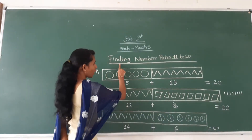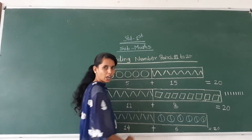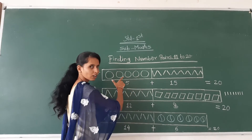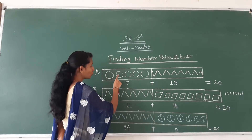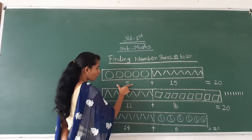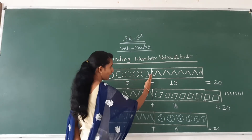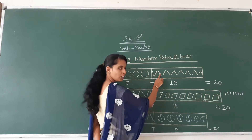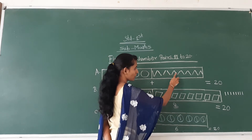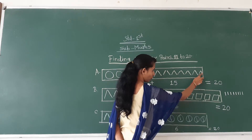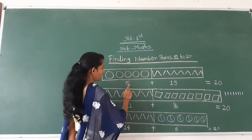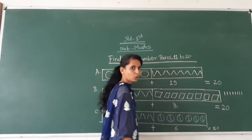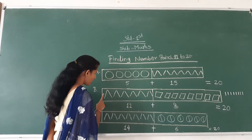Understood? Students, find the number here, 11 to 20. First example, how many circles here? 1, 2, 3, 4, 5. Five circles in this box. And how many lines here? 1, 2, 3, 4, 5, 6, 7, 8, 9, 10, 11, 12, 13, 14, 15. Five plus 15, how many counting? 20. We pair 11 to 20. Understood?